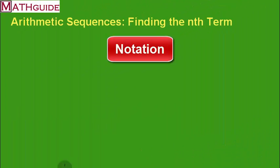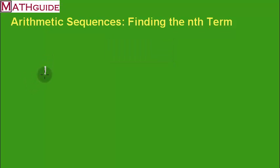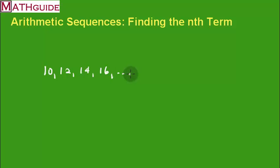Let's start by talking about the notation we use when looking at sequences, specifically arithmetic sequences. A sequence of numbers means there are a bunch of numbers separated by commas. So I'm giving you a sequence starting with 10, then 12, then 14, then 16, and so on. The dot dot dot means the sequence goes on forever — it never ends. In mathematics, we call the first term a1. That little one is not an exponent — it just means this is the first number in the sequence.